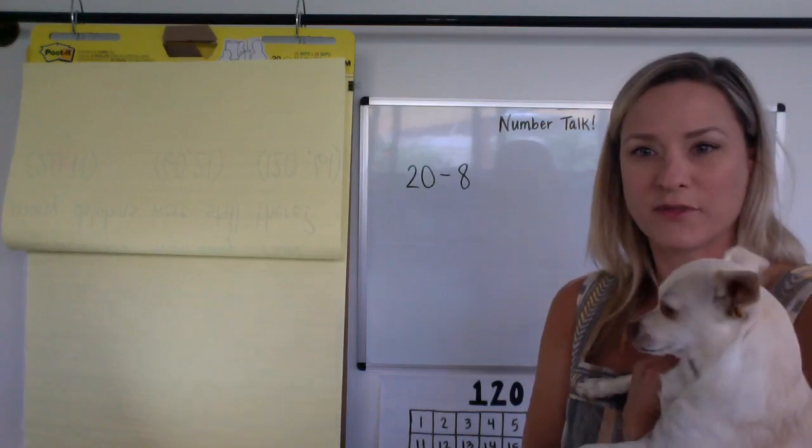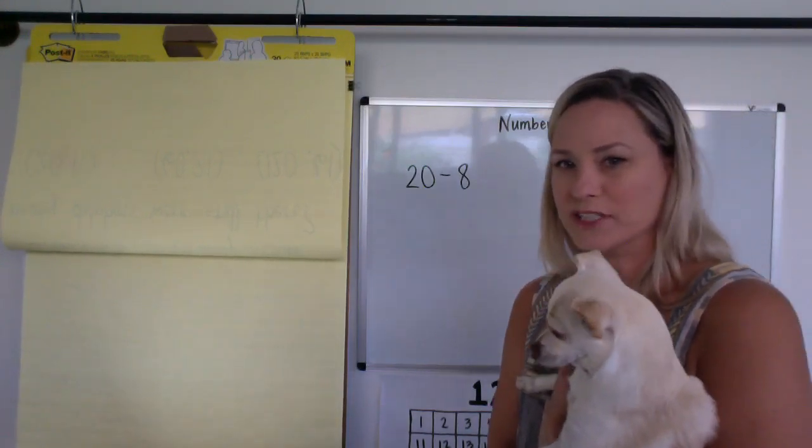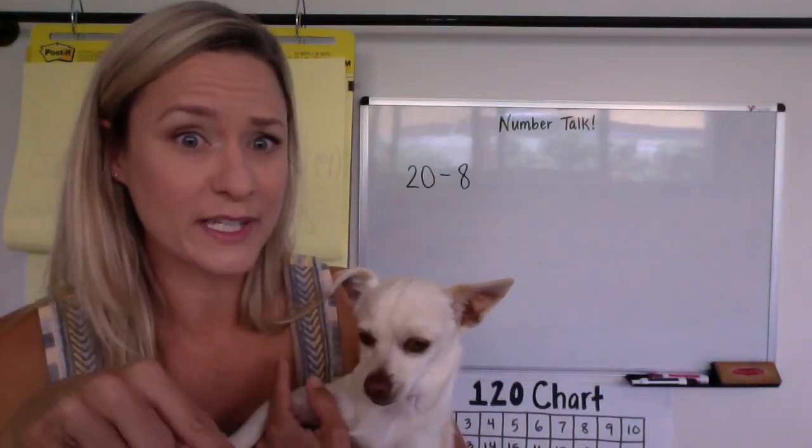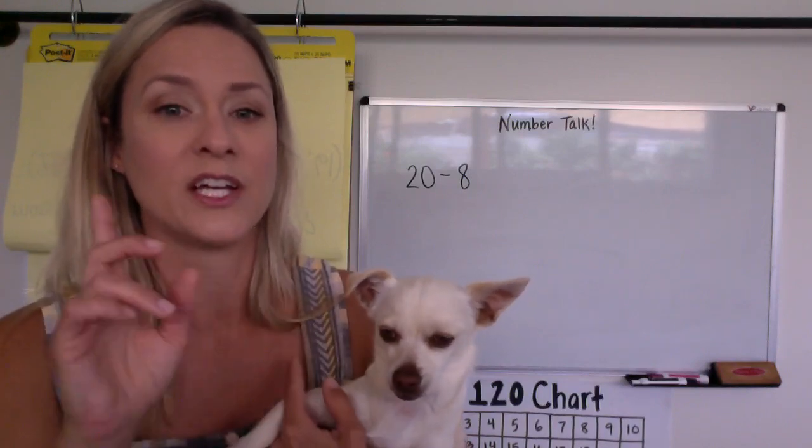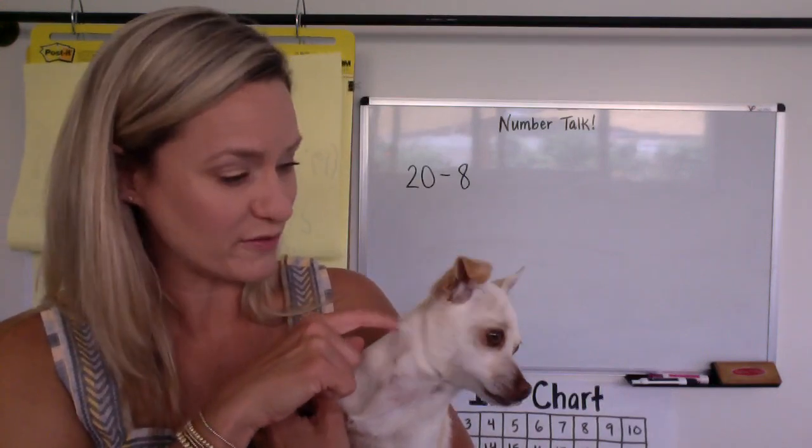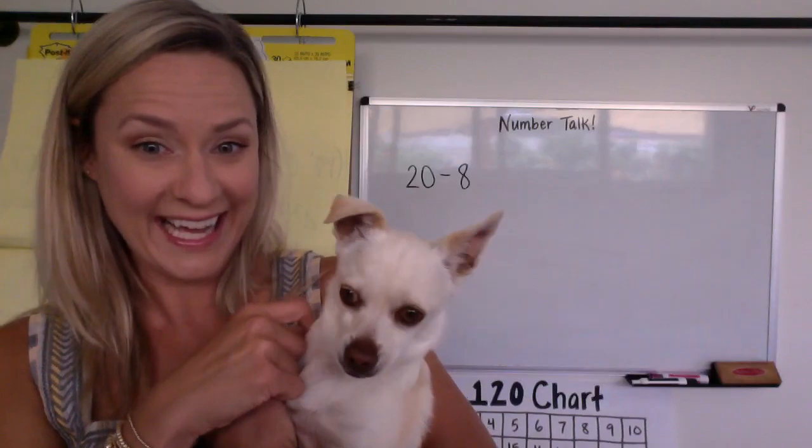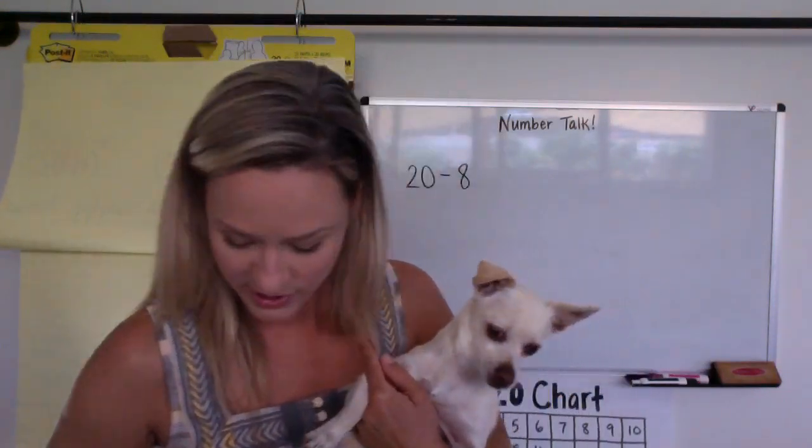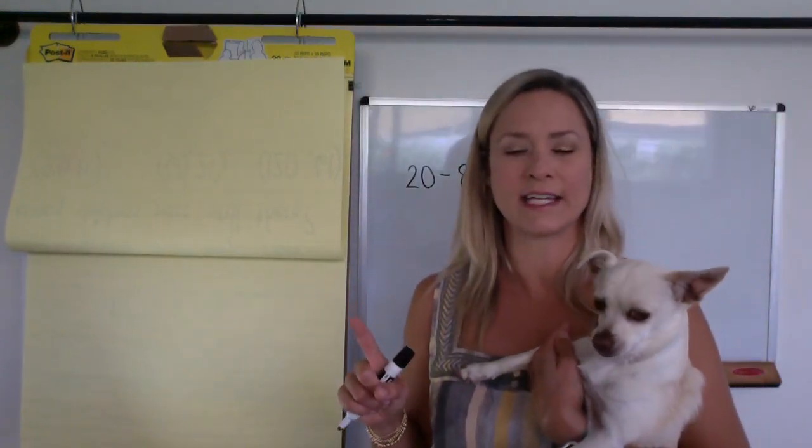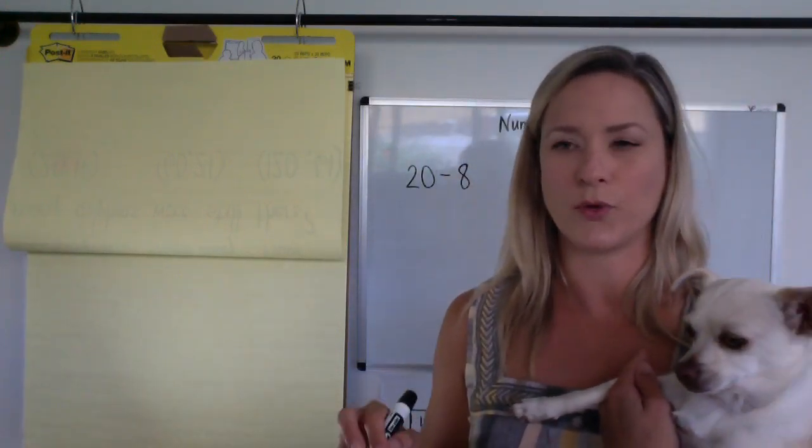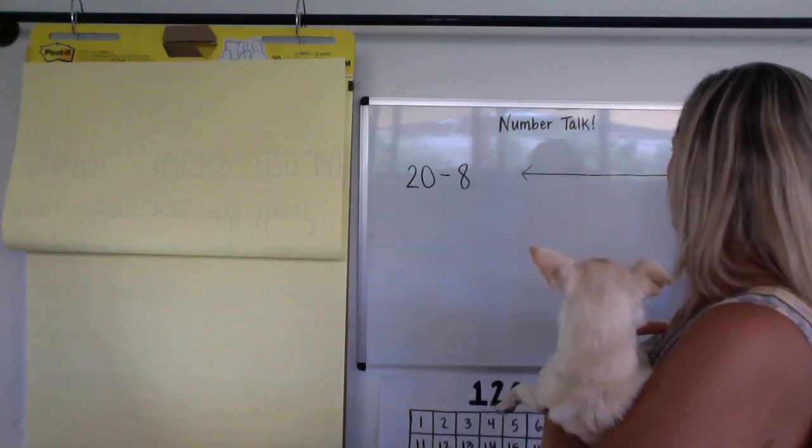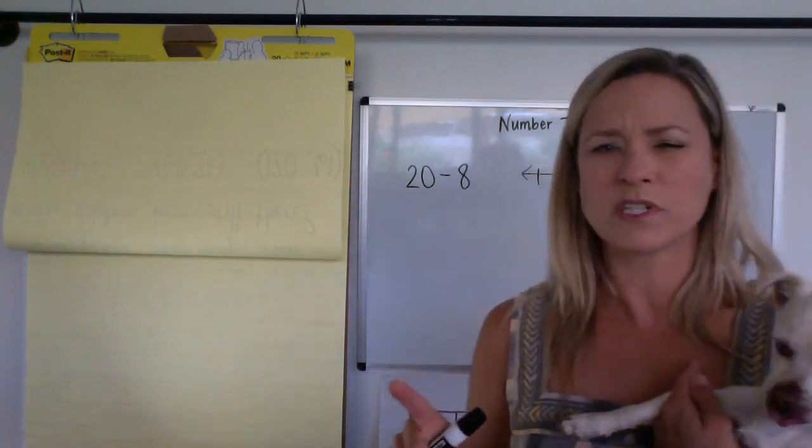On the count of three, tell me what you got for 20 minus 8. One, two, three, tell me. I heard you. I can hear you all the way from here. I heard 20 minus 8 equals, what'd you say? 12? Yeah. Did you hear 12? Yeah, I think he heard you. Do you see him? Okay. So 20 minus 8 equals 12. Let's see if we can prove it. I'm going to guess your strategy. I'm going to think that maybe some of you thought about doing this on a number line.